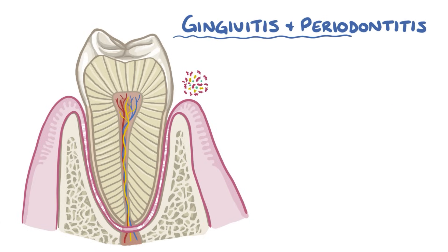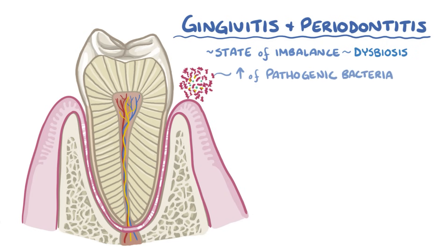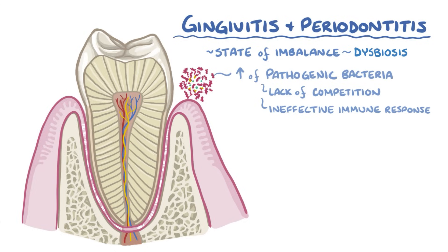Gingivitis and periodontitis represent a state of imbalance, or dysbiosis. This is when there's a relative increase in pathogenic bacteria either because of a lack of competition with other commensal bacteria, or because of an ineffective immune response in the mouth.